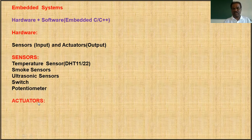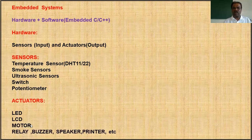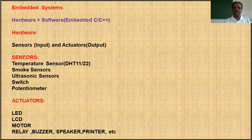Actuators are output devices. For example, if we get temperature from a temperature sensor and it is high, we can switch on the fan or AC. If it is low, we switch on the heater. Examples of actuators include motors — DC motors and stepper motors — LEDs, LCD displays, relays (for controlling high voltage electrical appliances), buzzers, speakers, and printers. So there are two categories in embedded systems: sensors or input devices, and actuators or output devices.